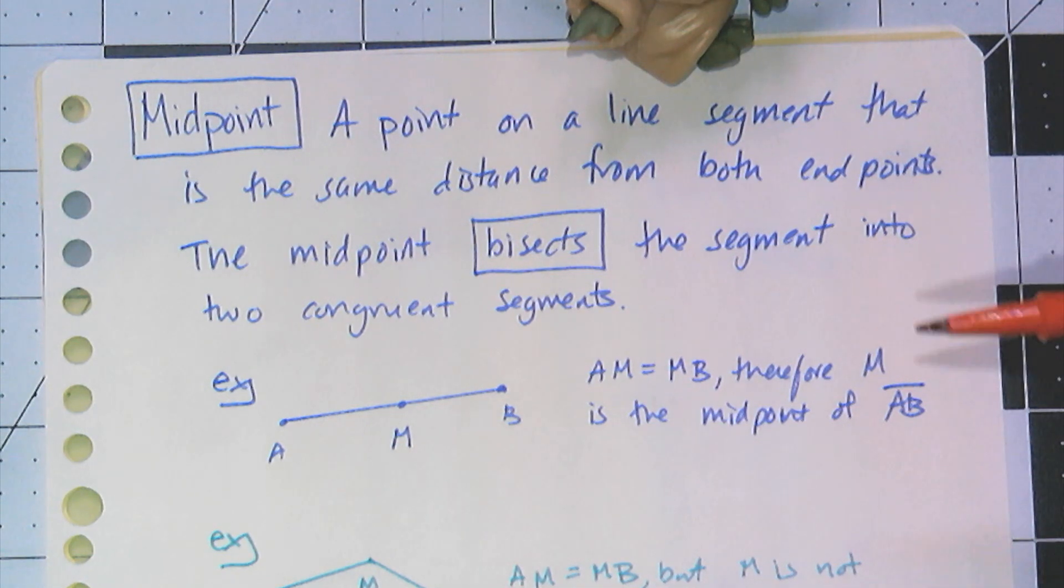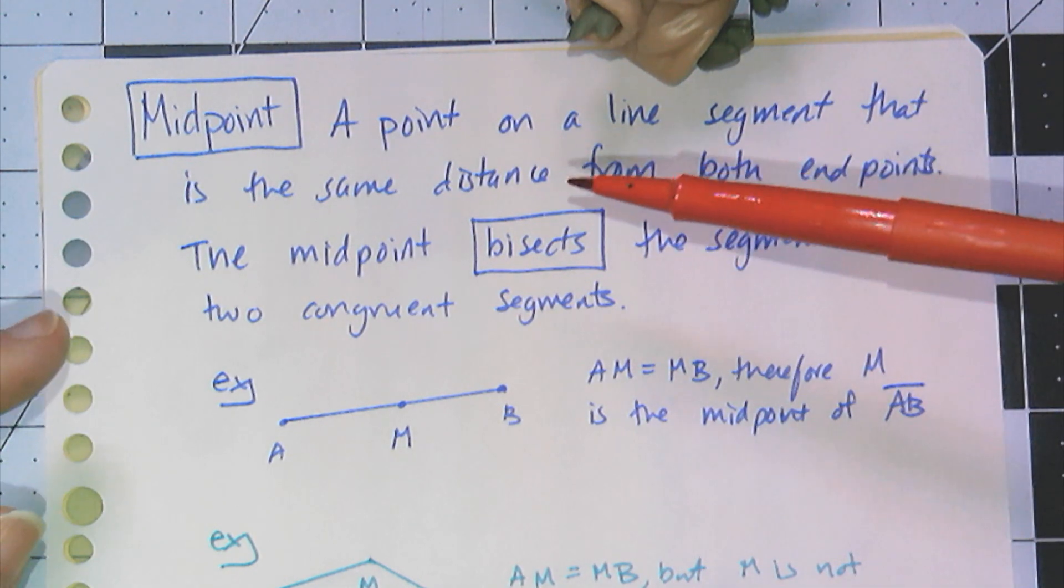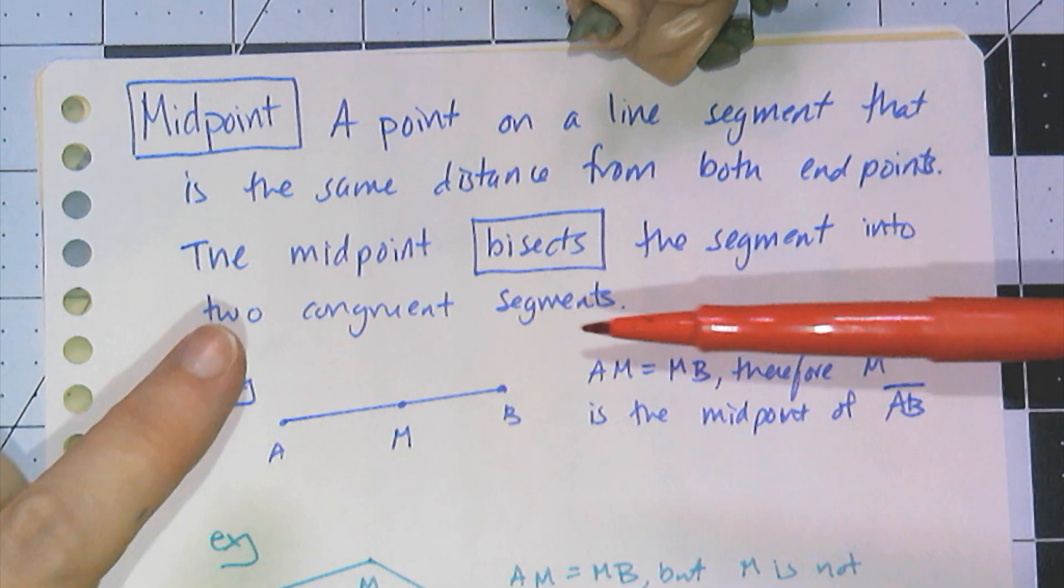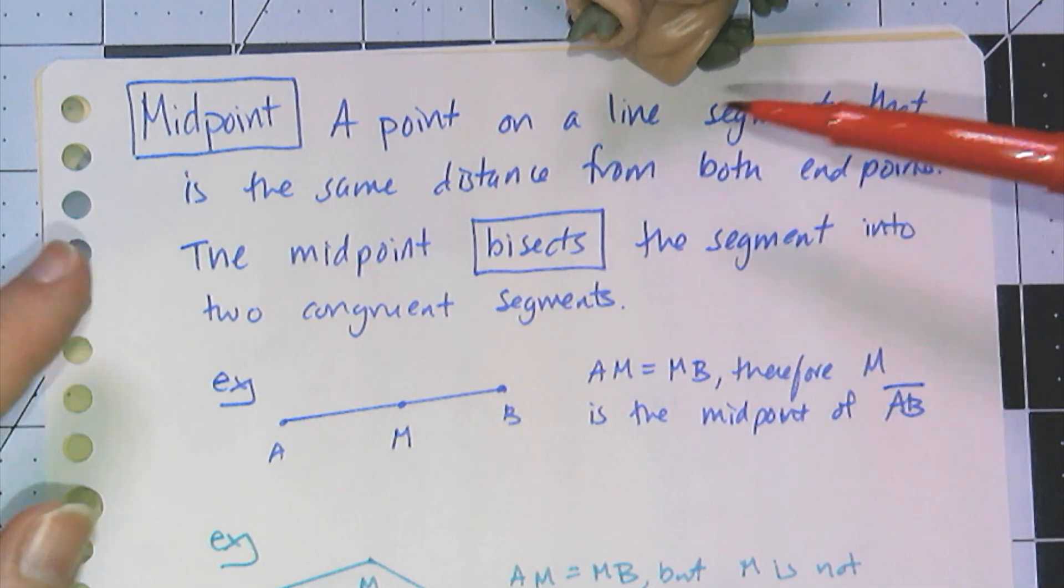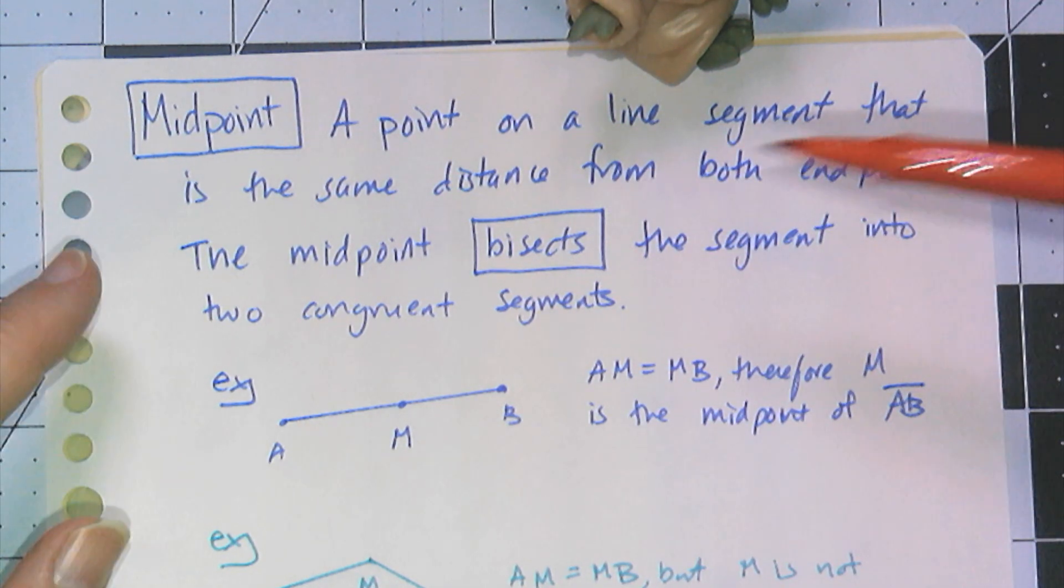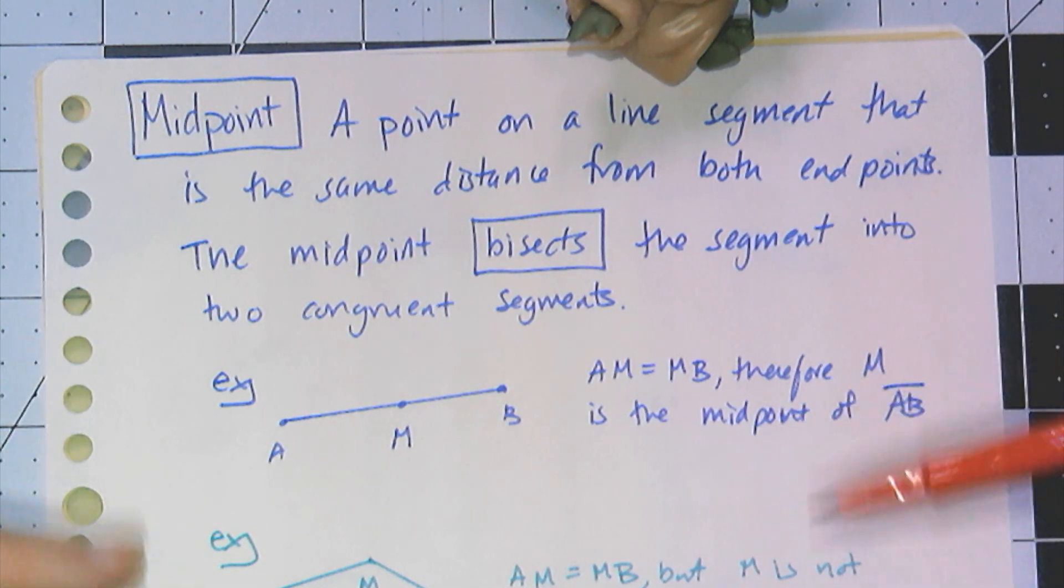Now that we have this idea of congruence and symbols for equal, we're going to talk about the word midpoint. A midpoint is a point on a line segment, not a line. Lines do not have midpoints, neither do rays. A point on a line segment that is the same distance from both endpoints. The midpoint is said to bisect the segment into two congruent segments. The word bisect means to cut in half.